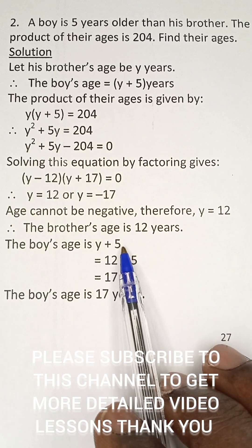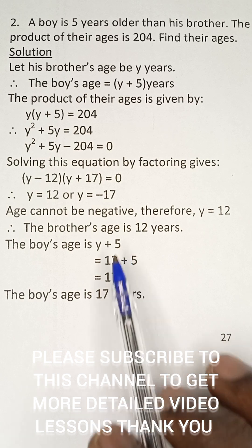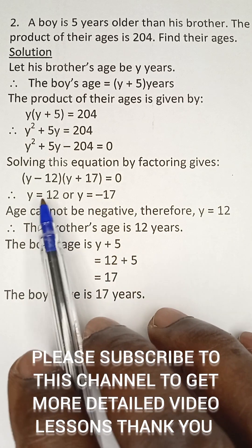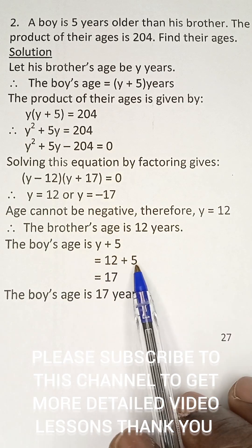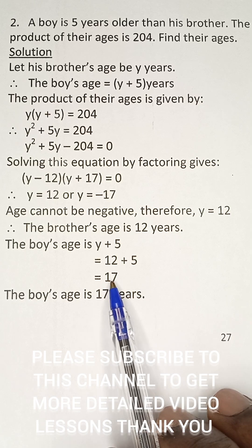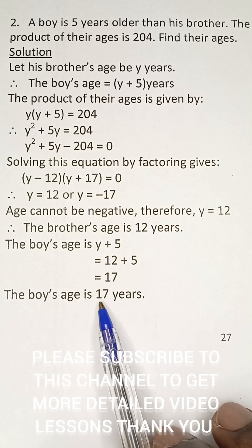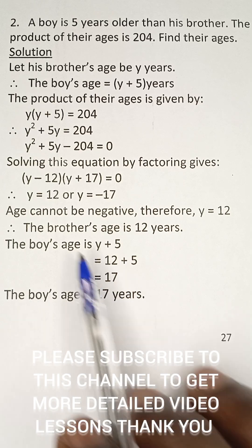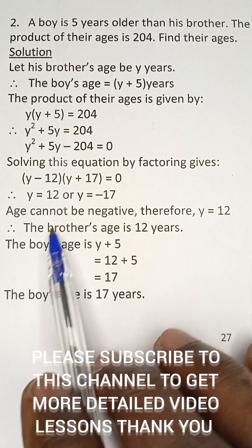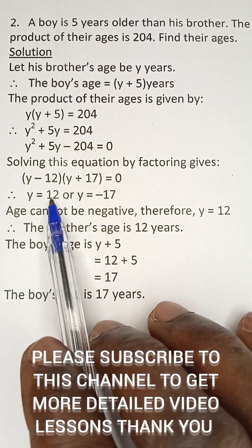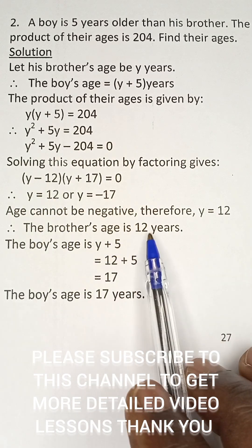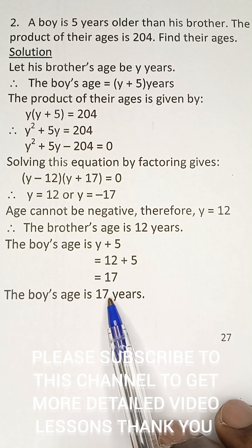Now the boy's age is y plus five. So you add five to y, which is 12. So 12 plus 5 will give us 17. So the boy's age is 17 years while the brother's age is 12 years. The brother's age is 12 years and the boy's age is 17. That's the final answer.